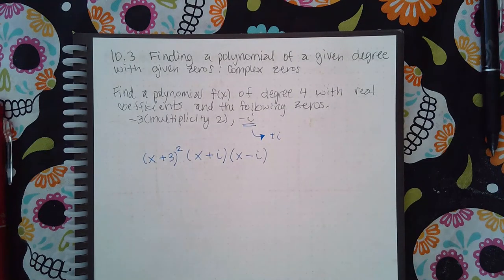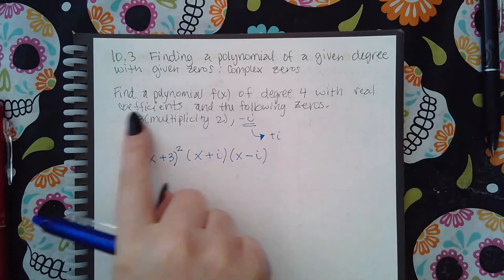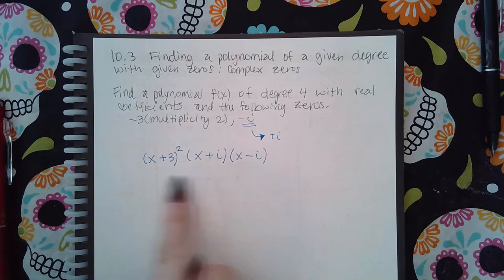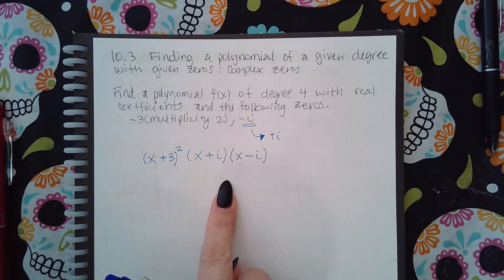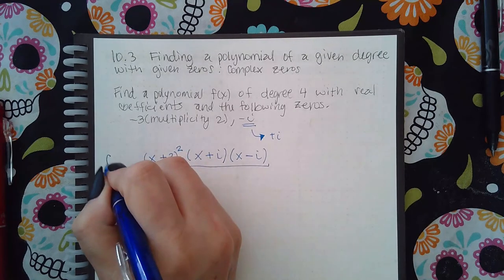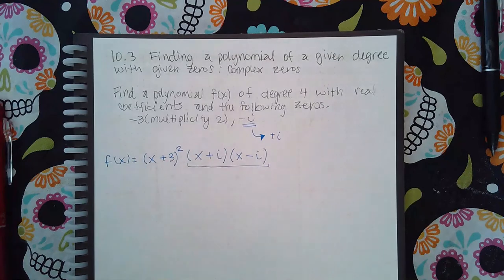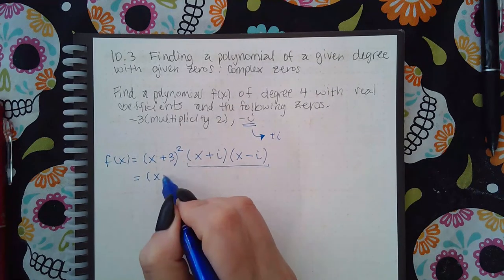You always make sure that whatever the zeros are, your factors have opposite signs. Now it does want a degree four with real coefficients, which means I do have to multiply this out. My biggest hint to you when you have to multiply them out is multiply your conjugates out first, and then you can multiply everything else. It just makes it look a little bit easier to work out.